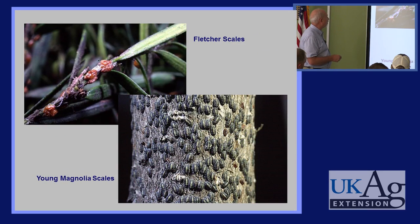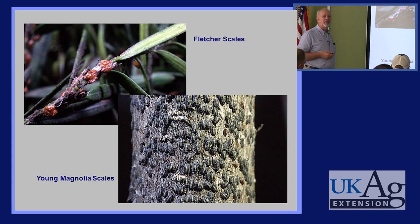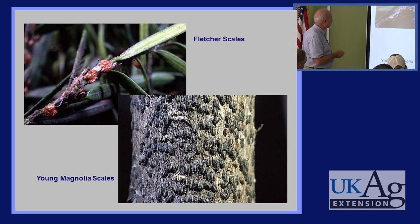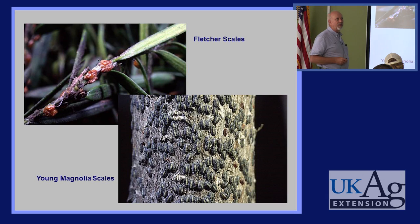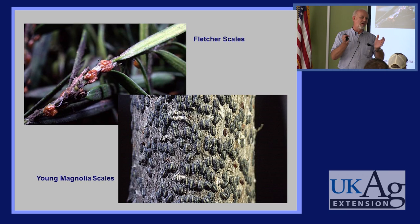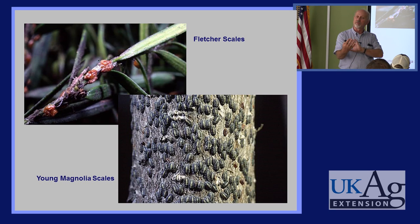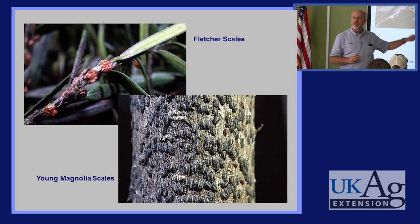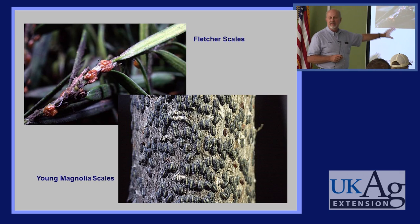If the female is producing eggs, mark it and come back a month later when crawlers are out on the leaves, then use oil to take the crawlers out. We're also seeing an increase in Fletcher scale in Ohio, primarily on junipers, arborvitae, and taxus. A couple of oil treatments usually work. Magnolia scale is unique — it only releases crawlers in August and early September, while virtually all other soft scales have crawlers emerging late May through mid-June.